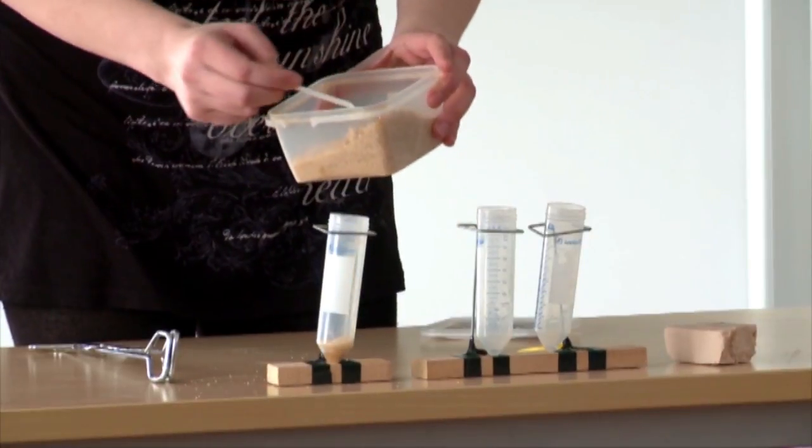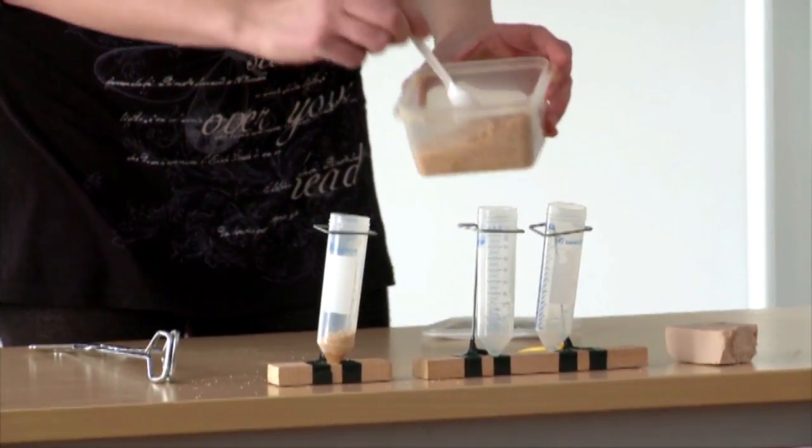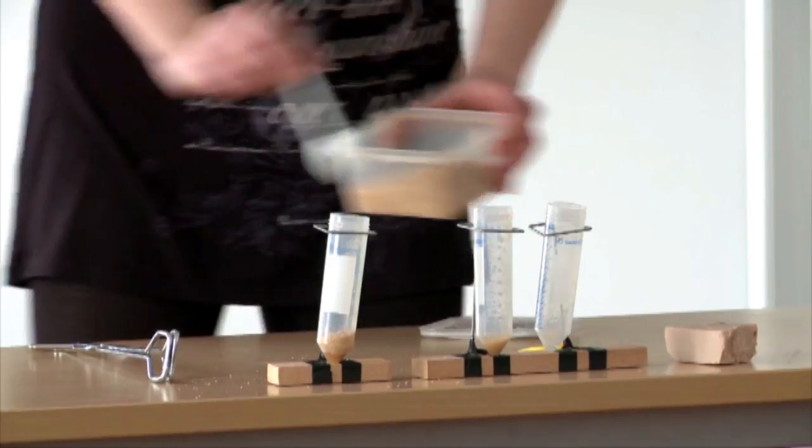We put two teaspoons of sugar into the first container, into the second, half a teaspoon, into the third, none.